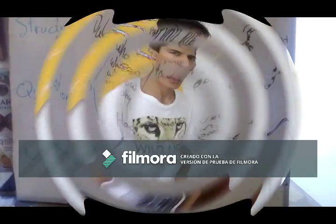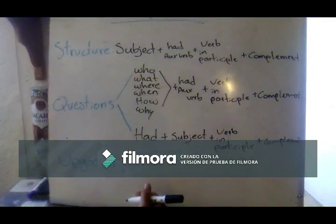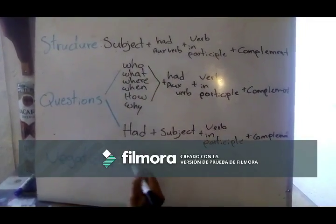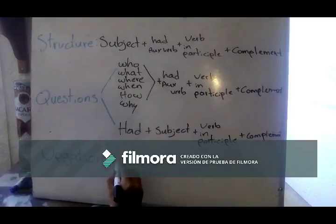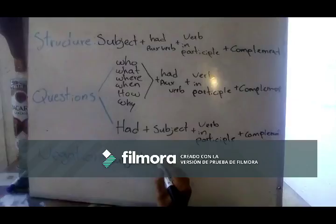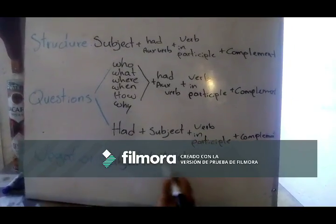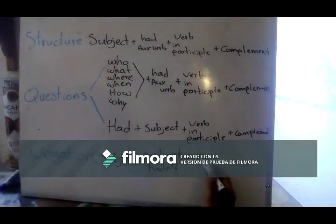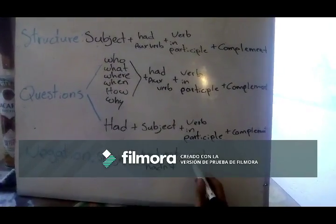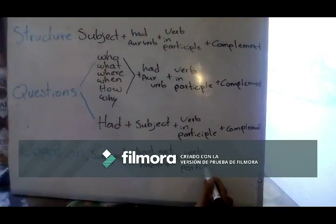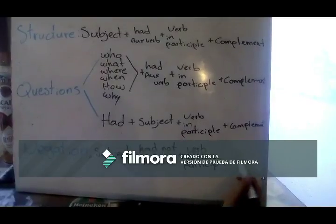Now we can see some examples. We will see how to structure the negation form of past perfect. We have our subject, plus 'had not' or 'hadn't', plus our verb — same as the other structures — and our complement.